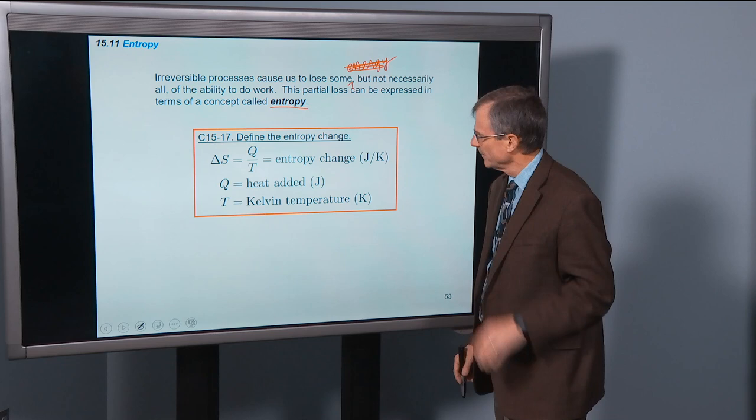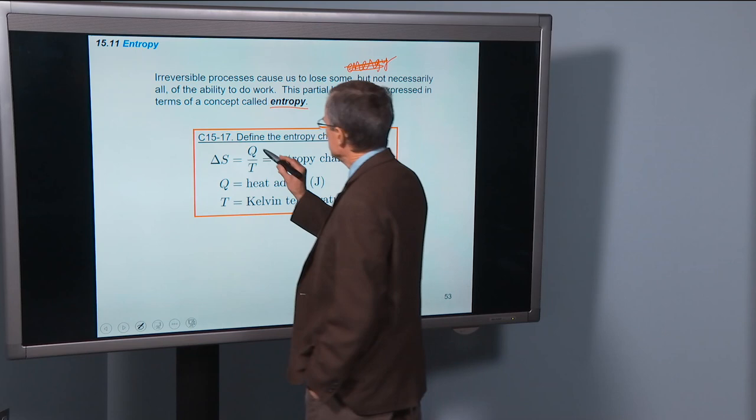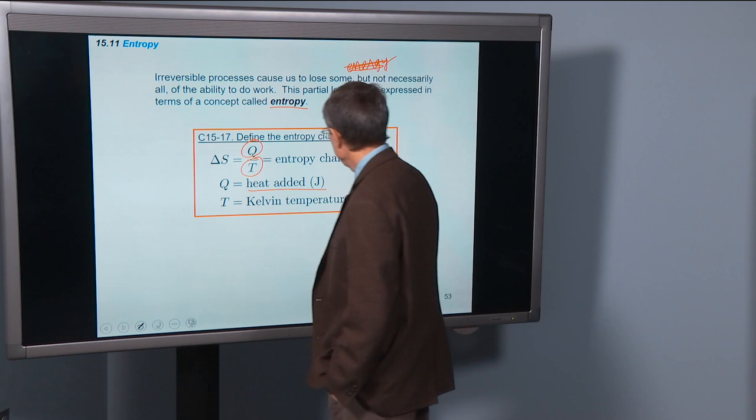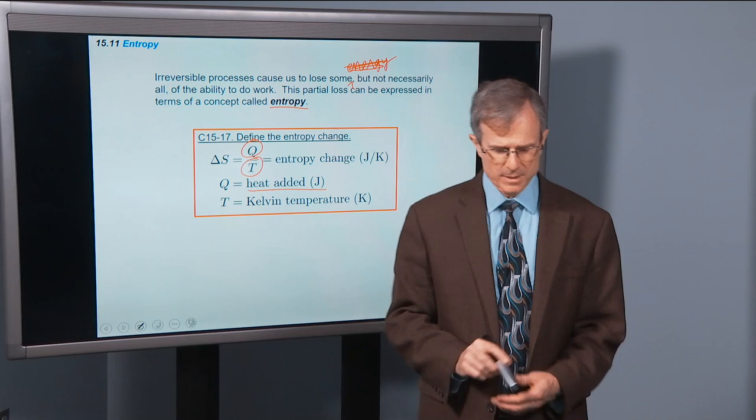So let's define the entropy change. The entropy change for a particular process is the heat added during that process, divided by the Kelvin temperature under which the process is taking place.